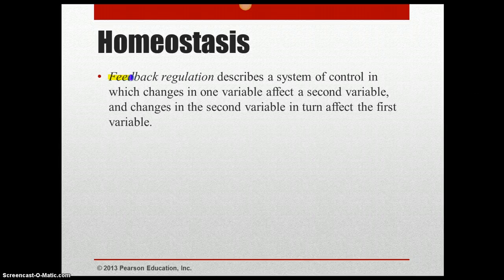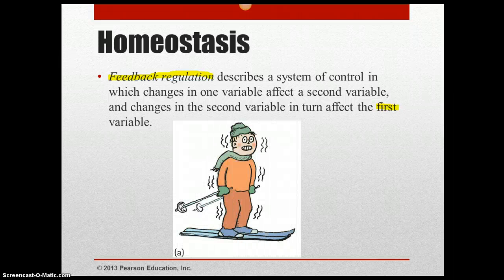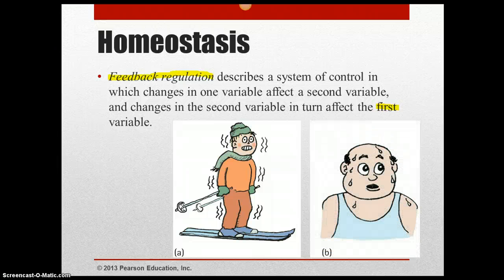Feedback regulation describes a system of control in which changes in one variable affect a second variable, and changes in the second variable in turn affect the first variable. We see this when our body temperature tries to remain stable regardless of the outside temperature. When it's cold, we shiver to generate heat and warm up our body. And when it's too hot, our body starts to sweat, and when the sweat evaporates it then cools our body.